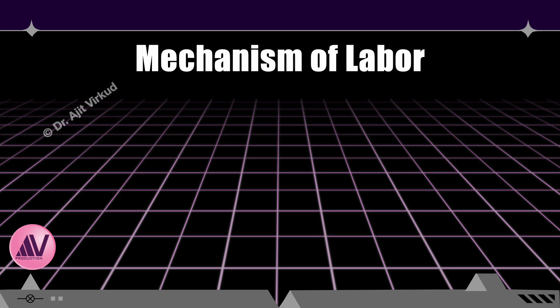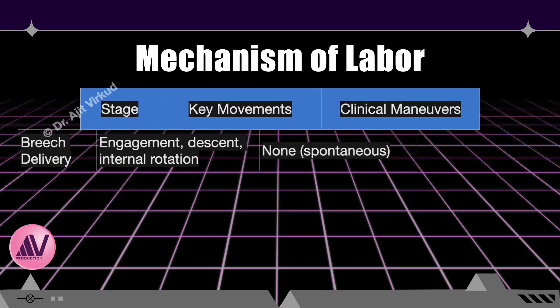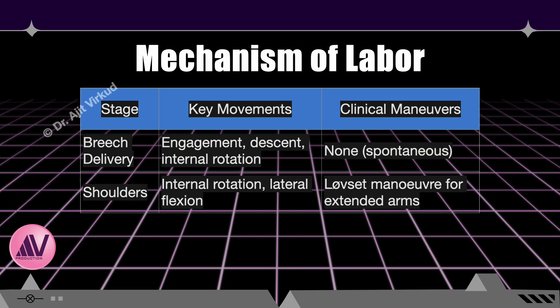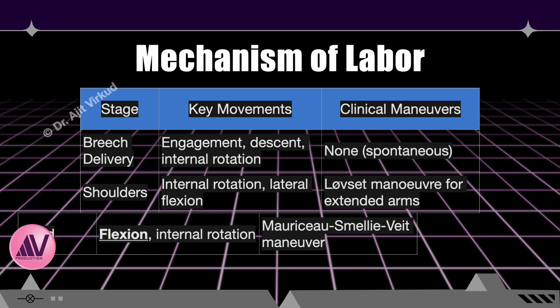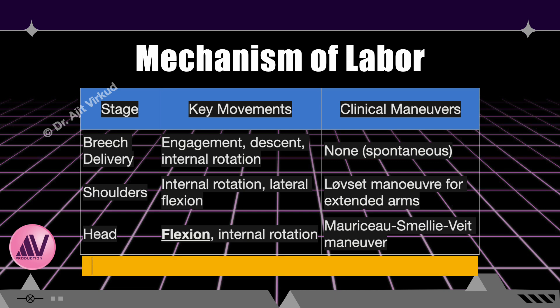This table summarizes the mechanism of labour in breech presentation. It illustrates the stages of labour, the key cardinal movements that must occur at each stage, and the clinical manoeuvres used to achieve them. Timely manoeuvres are critical to ensure safe delivery. You can pause here to assimilate the information given.